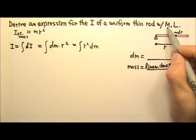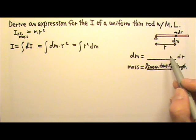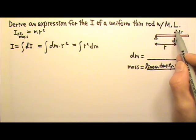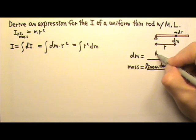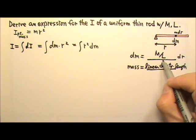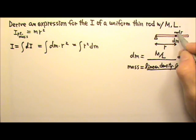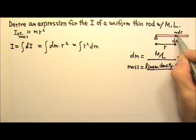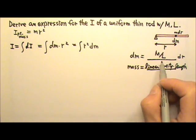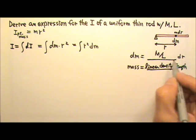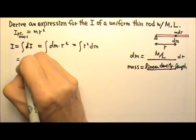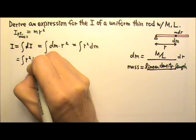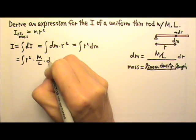For a rod with mass M and the length L, what do you think is the linear density? What do you think is the mass per unit length? It is M over L. So if we multiply the linear density by the length of this little segment, we get the mass that's in that little segment. So we just have to replace the dm with that. So the integral r squared and dm is M over L dr.